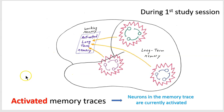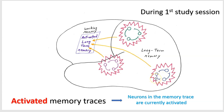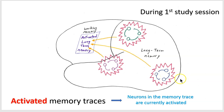Let's look at activated memory traces. This happens during the learning process itself — when we see and hear things, some set of neurons gets activated, and a subset of those neurons grow stronger connections with each other, forming a memory trace for the learning event. It's also true that when we retrieve a memory, those memory traces will be activated as well.